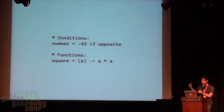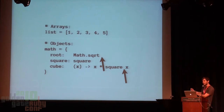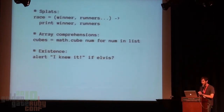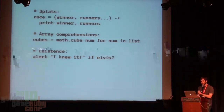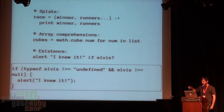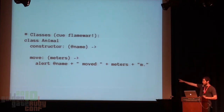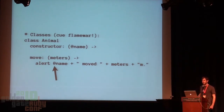Functions: just put parens around the arguments, then a little arrow, then the body of the function. Notice — no return statement. It just returns the last value, just like in Ruby. Arrays and objects look just like in JavaScript, but commas at the end of lines are optional, and parens around function invocations are optional. You can do splats of arguments to slurp them up into an array. You can do a list comprehension like in Python. There's an existence operator that tells you if a variable exists — this turns into the JavaScript that all of you hate to write: 'if typeof elvis !== undefined && elvis !== null, then do that.'